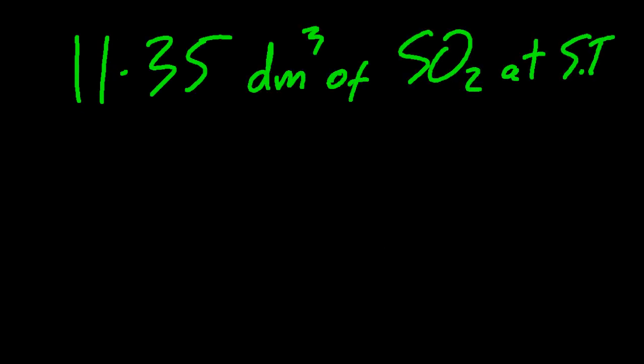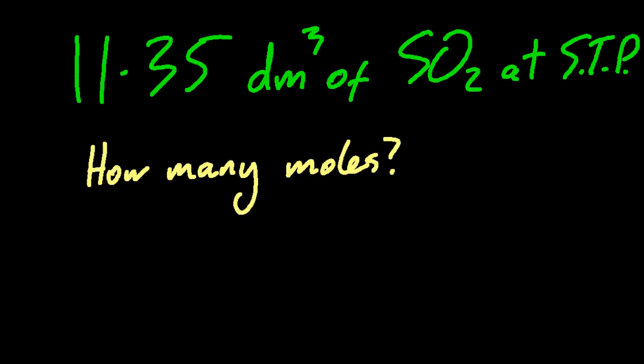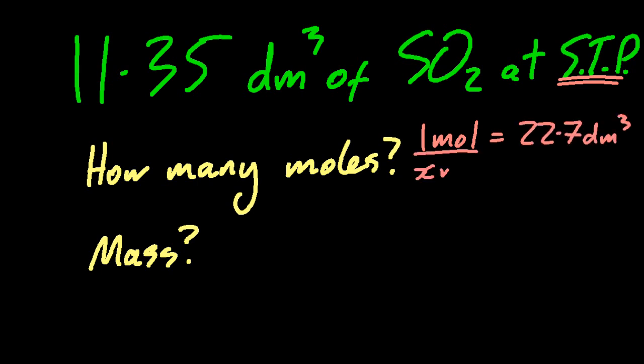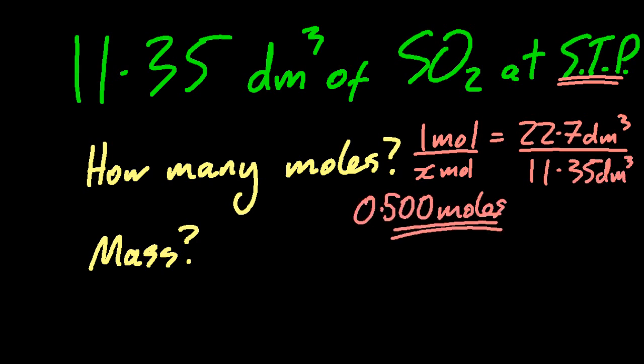11.35 decimeters cubed seems an arbitrary number, but that's half a mole of gas at STP. If one mole is 22.7 decimeters cubed, how many moles is 11.35? Half a mole. What's the mass? It's just simply working out the mass of half a mole of sulfur dioxide. Using the equation, mass is moles times molar mass. That gives me 32 grams.